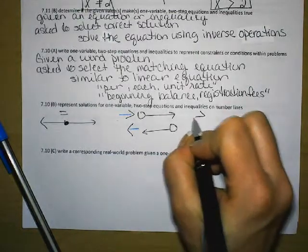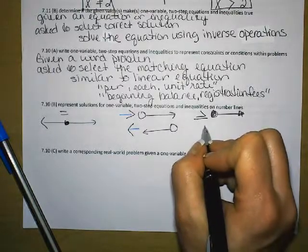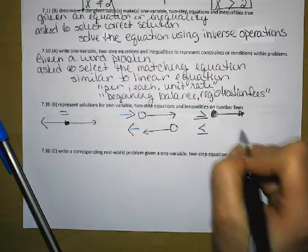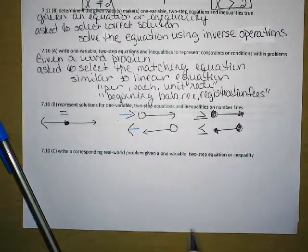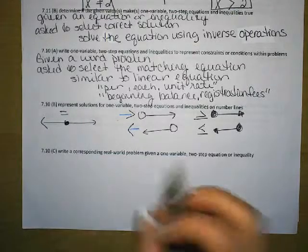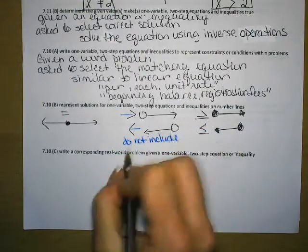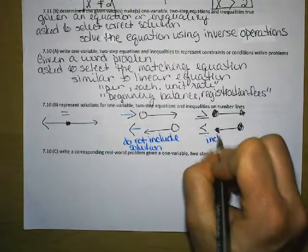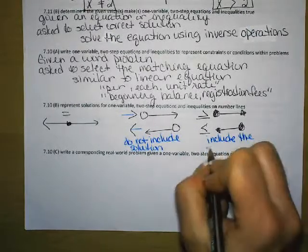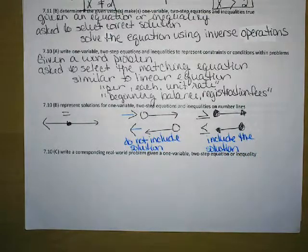If it is greater than or equal to, it is closed because it is included and goes to the right. The closed circle includes the solution. So these open circles do not include solutions. These closed circles include the solution. So make sure that the answer that you get is a part of the solution.